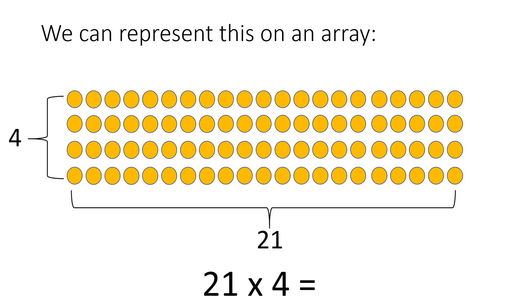We can also represent this equation on an array. We can partition the array into 20 times 4 is 80, and 1 times 4 is 4.